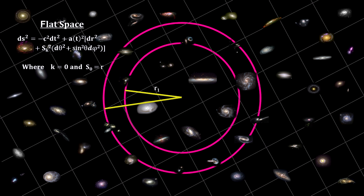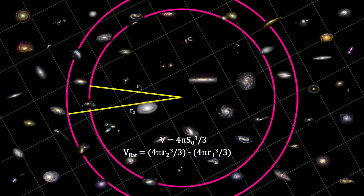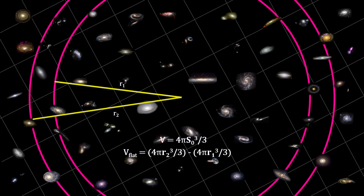If we look out into a flat universe, we would see the number of galaxies vary with the volume.